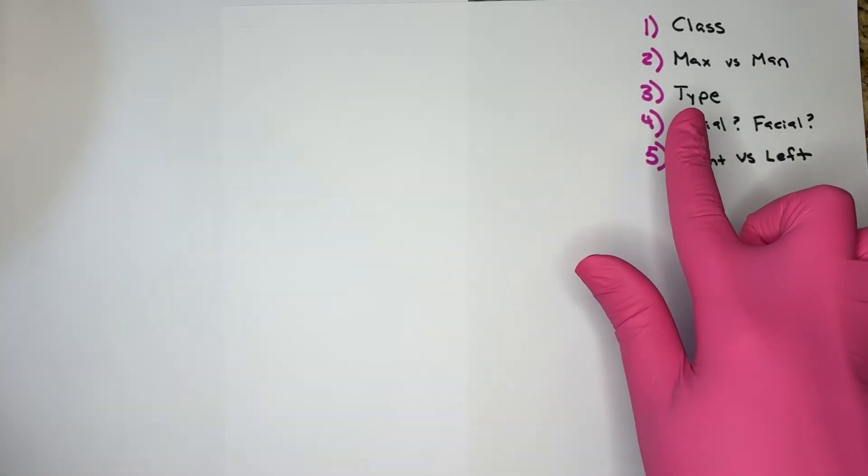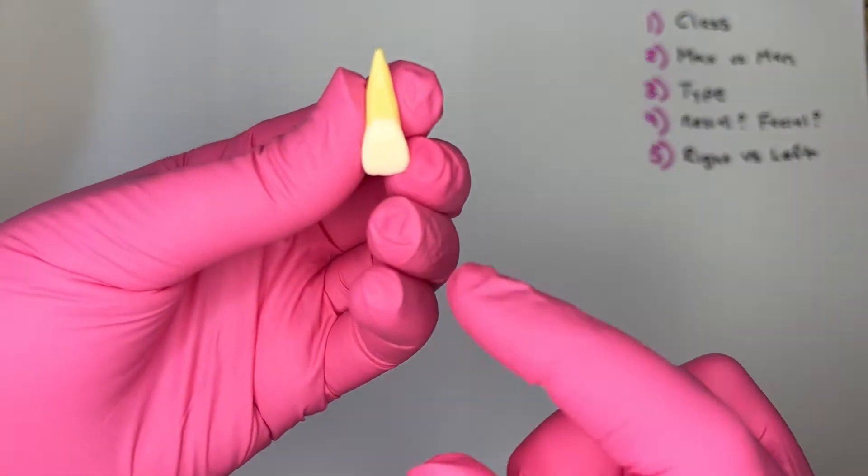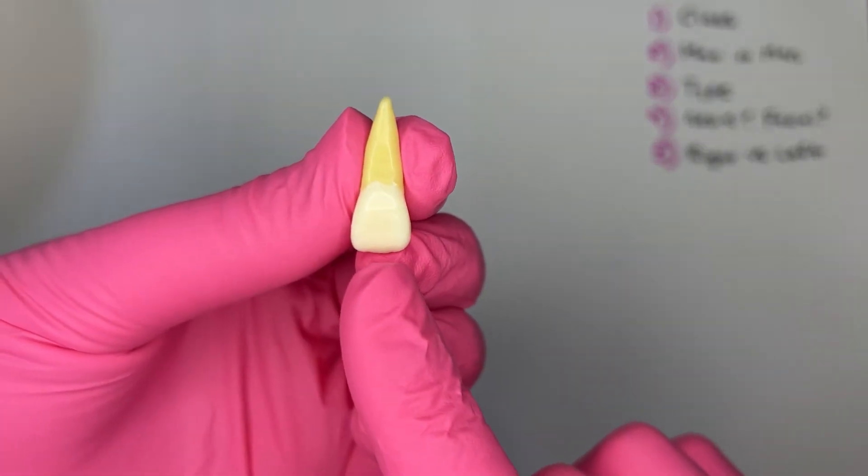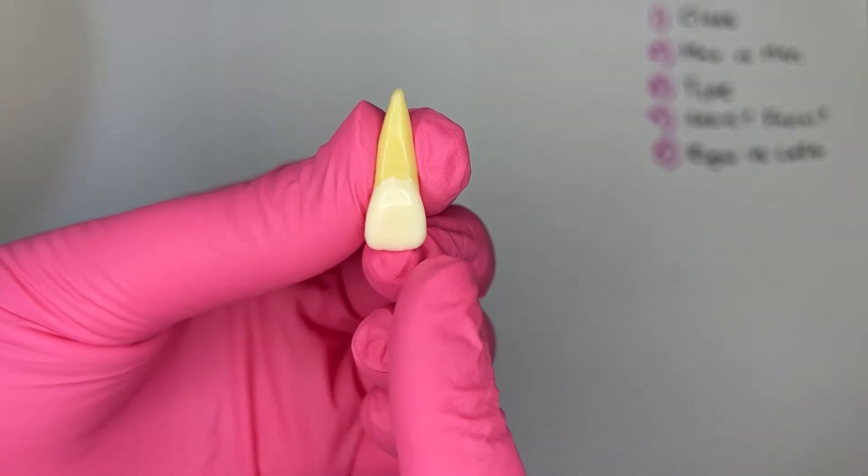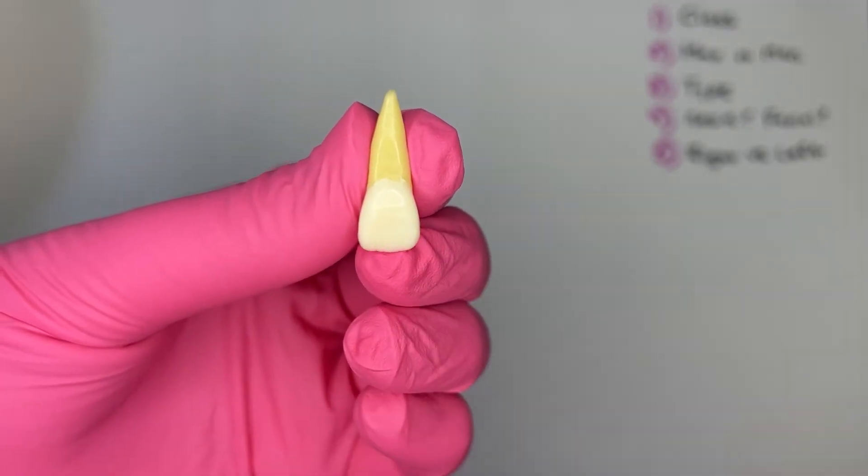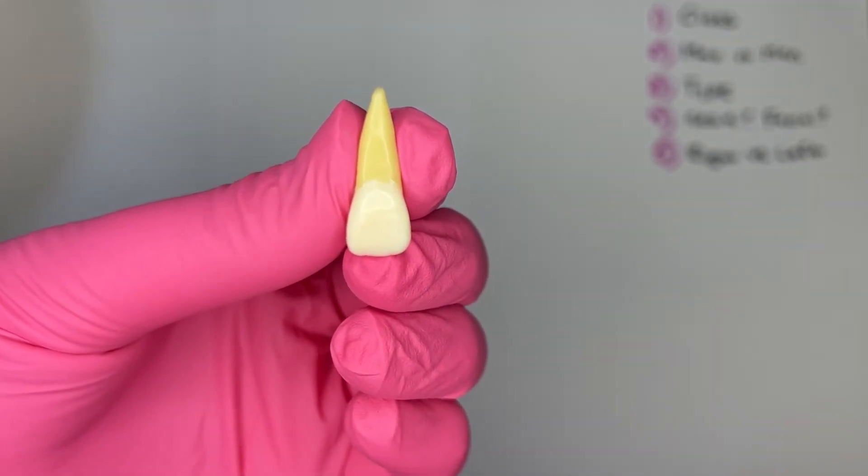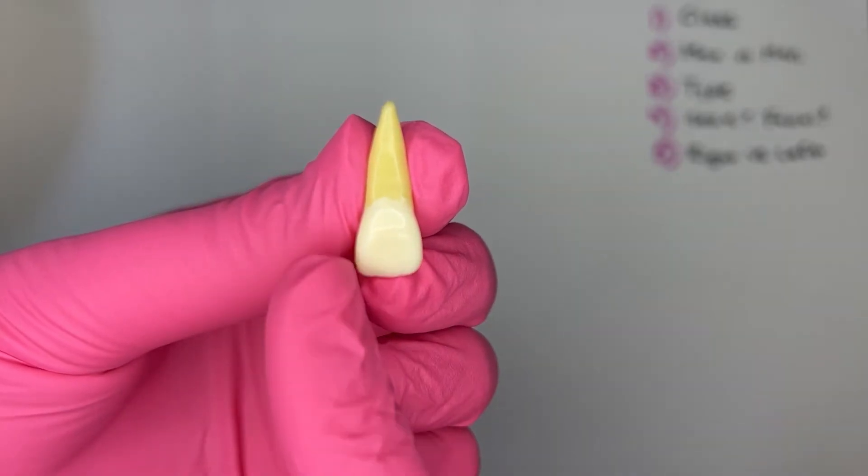Step number three, what type of maxillary incisor? Central versus lateral. I know that this is a central maxillary incisor because it's quite square. The angles are quite sharp, while the lateral tends to be more rounded and less sharp at the angles.